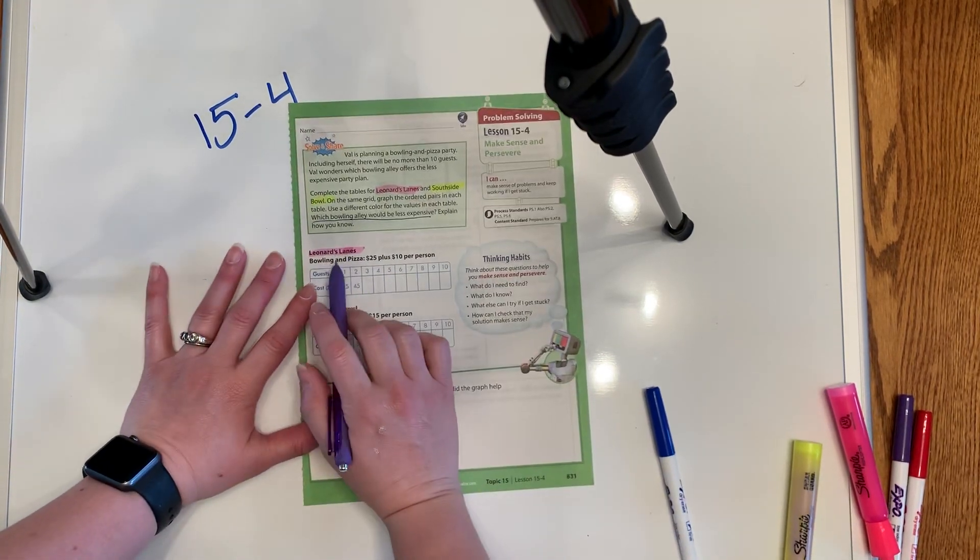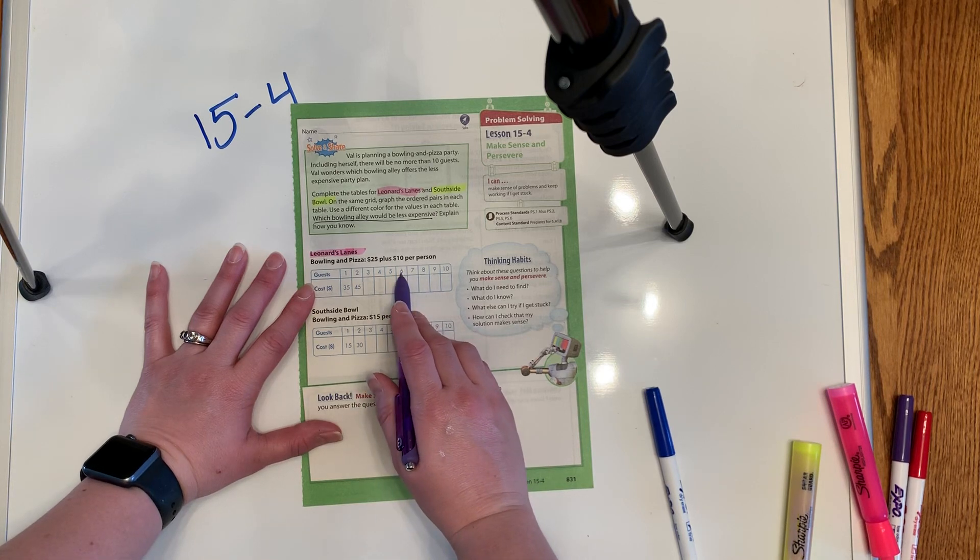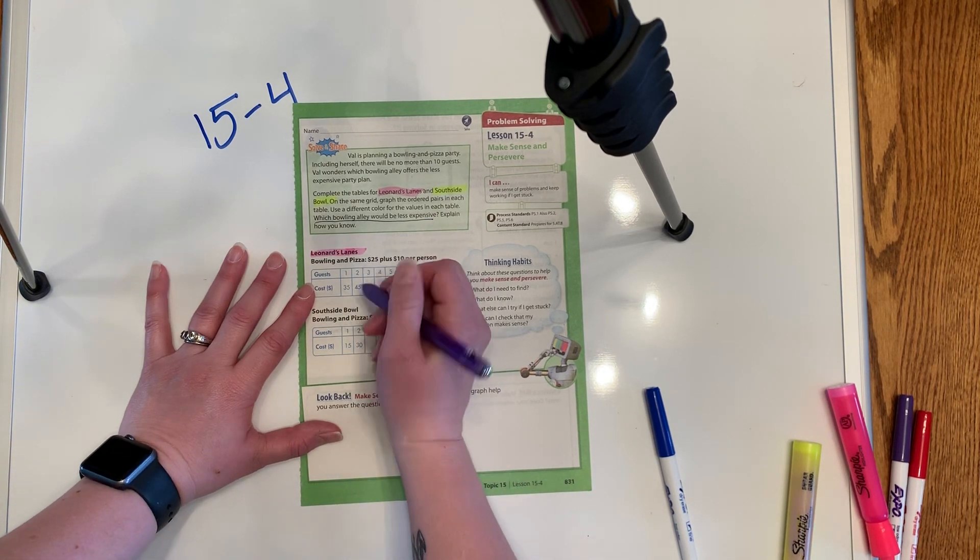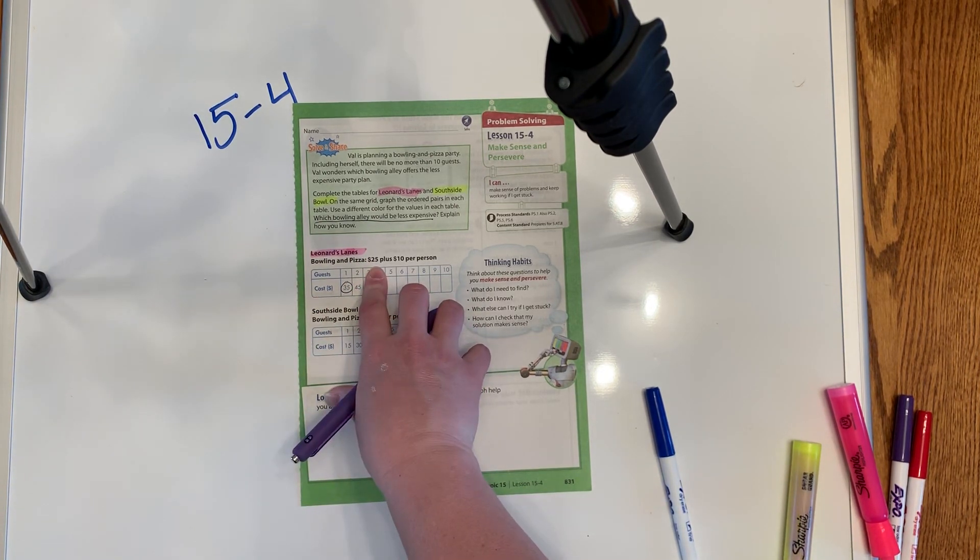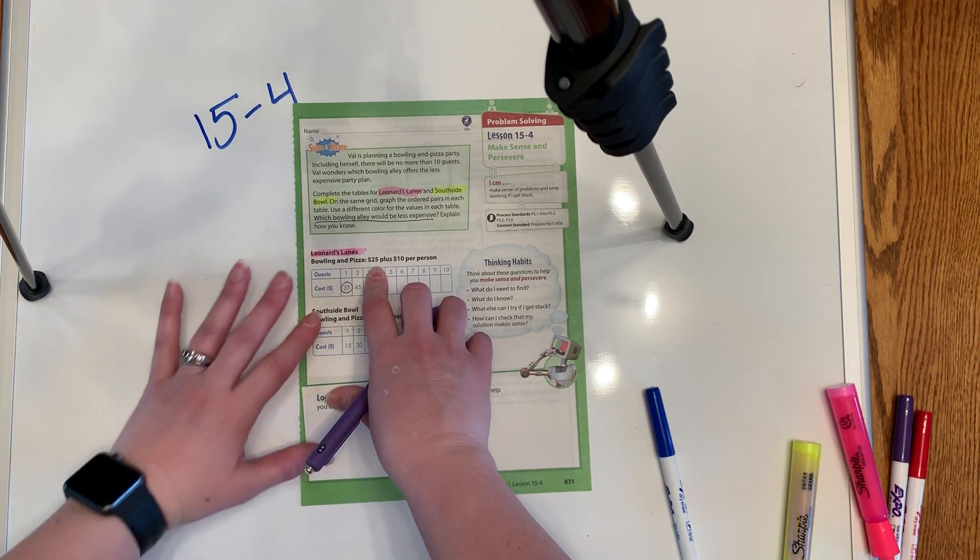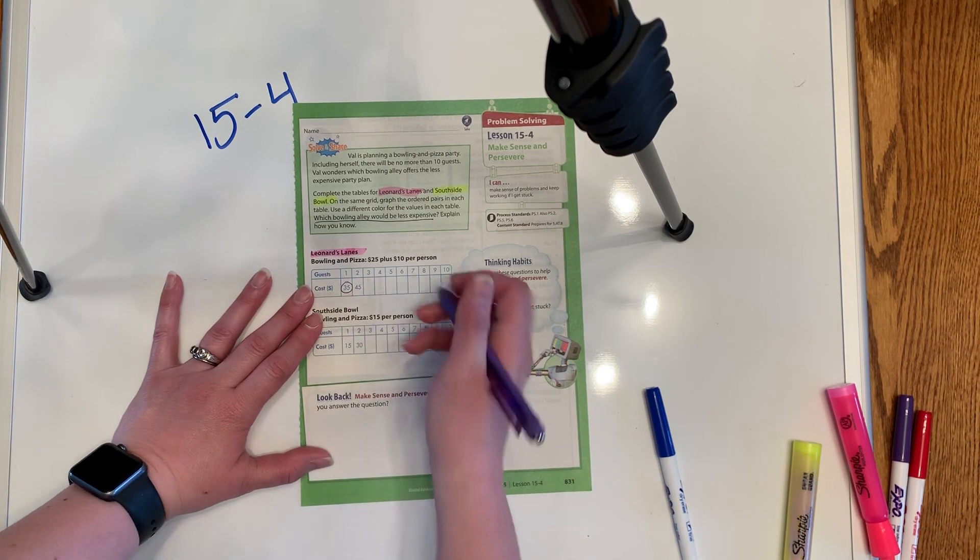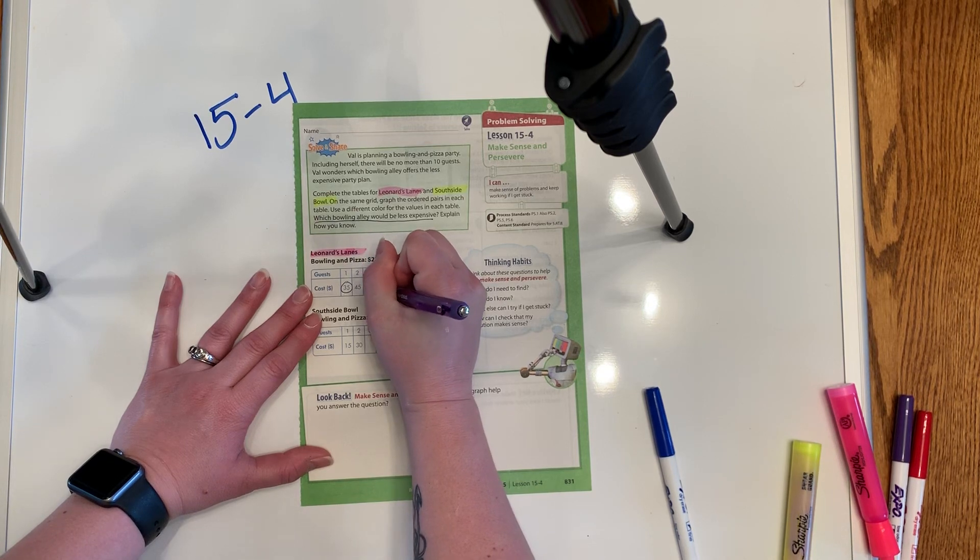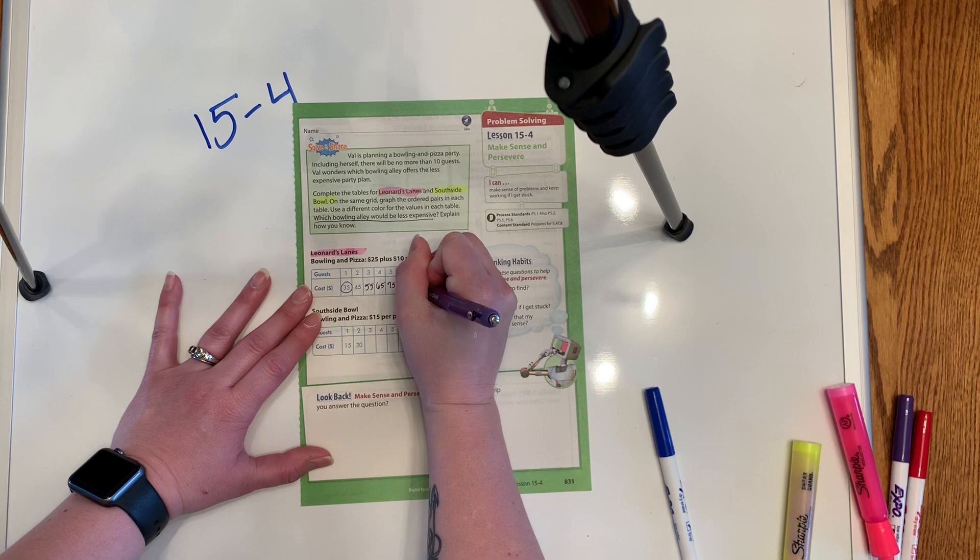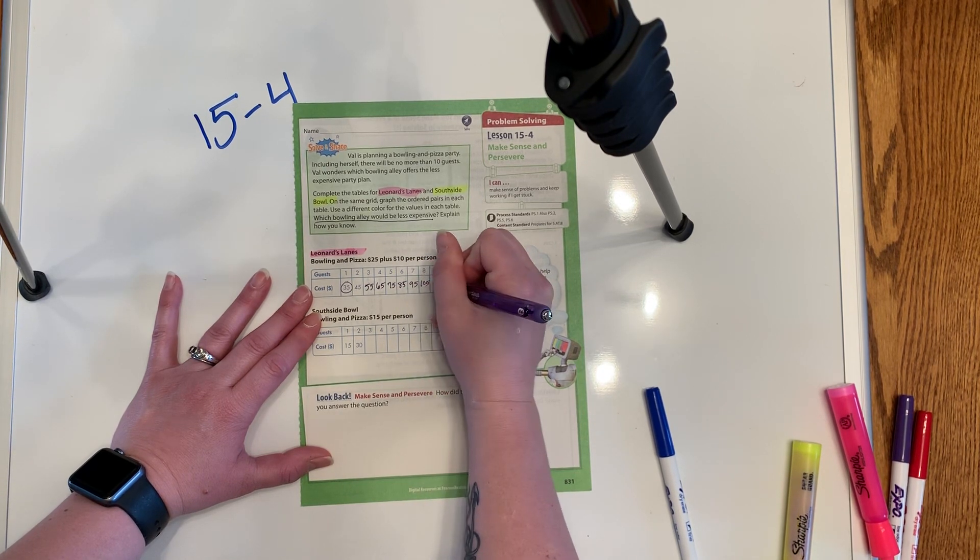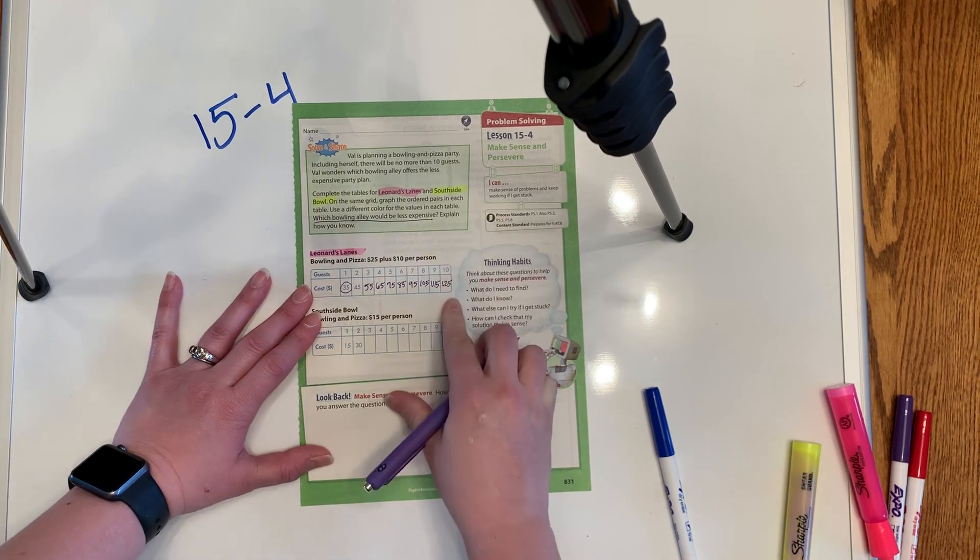So for Leonard's Lanes, it says bowling and pizza is $25 plus $10 per person. And so you'll notice that for number one, for the very first guest, it says $35 because it's like a $25 maybe holding fee for the lane or something like that. And then $10 per person every time. So then it goes up for person number two, it goes up to $45. So then person three would be $55, $65, $75, $85, $95, $105, $115, and then $125 for person number 10.